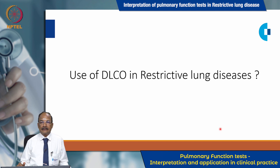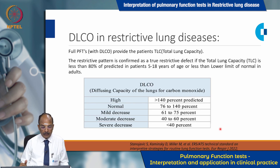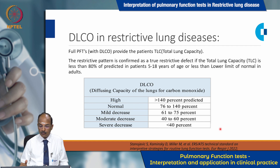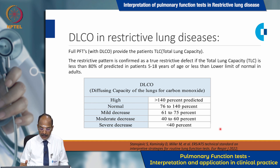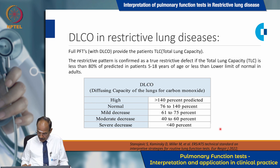How can DLCO be used to assess restrictive lung function? Full PFT with DLCO provides the patient's total lung capacity. The restrictive pattern is confirmed as a true restrictive defect if TLC is less than 80 percent of predicted in patients aged 5-18 years, or less than the lower limit of normal in adults. Based on DLCO values: more than 140 percent predicted is high; 76-140 percent is normal; 61-75 percent is mild decrease; 40-60 percent is moderate decrease; and less than 40 percent is severe decrease in DLCO.